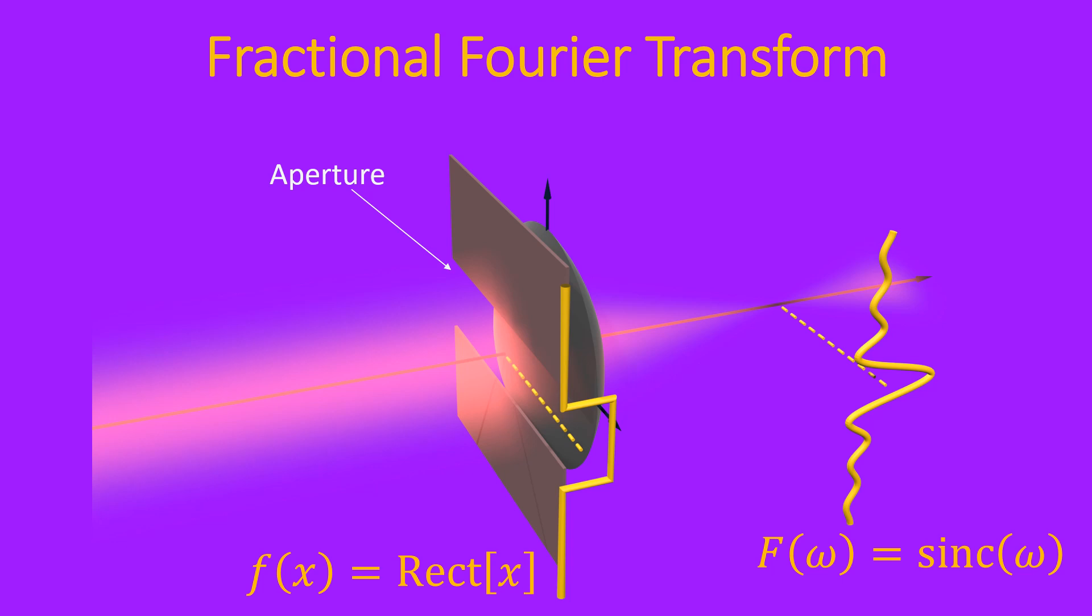If we were to look at the light at the focal point, after having passed through that aperture, we would see a bright focal point, and the light kind of ring as it moves away. That is a sinc function. A sinc function is the Fourier transform of this rectangle function. So a lens performs a Fourier transform. The light we see at the focal plane is the Fourier transform of the light right at the lens.